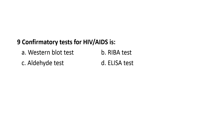The confirmatory test for HIV/AIDS is the Western Blot test. The RIBA test — which stands for Recombinant Immunoblot Assay — is the confirmatory test for Hepatitis C. The Aldehyde test is the confirmatory test for Kala-azar. The ELISA test, which stands for Enzyme-Linked Immunosorbent Assay, is used in most cases such as syphilis, HIV, and other diseases.